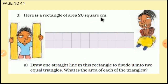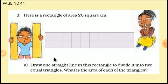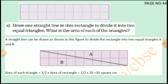Here is a rectangle of area 20 square centimeter. The first exercise: draw one straight line in this rectangle to divide it into two equal triangles. What is the area of each of the triangles? We should draw one straight line in this rectangle to divide it into two equal triangles.